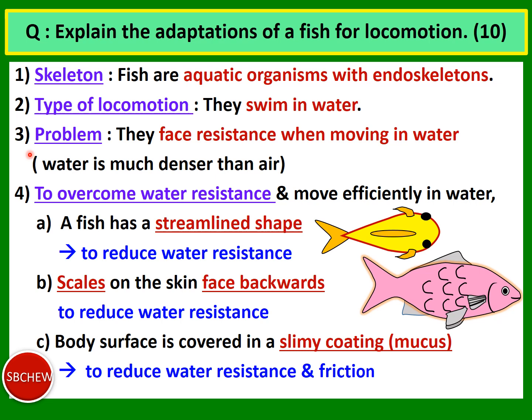Fish face resistance when moving in water, as water is much denser than air. People who swim will experience that it is much more difficult to swim through water than to walk on land facing air resistance. Because water is much denser than air, it gives more resistance to movement, so the fish needs adaptations to overcome water resistance and move more efficiently.